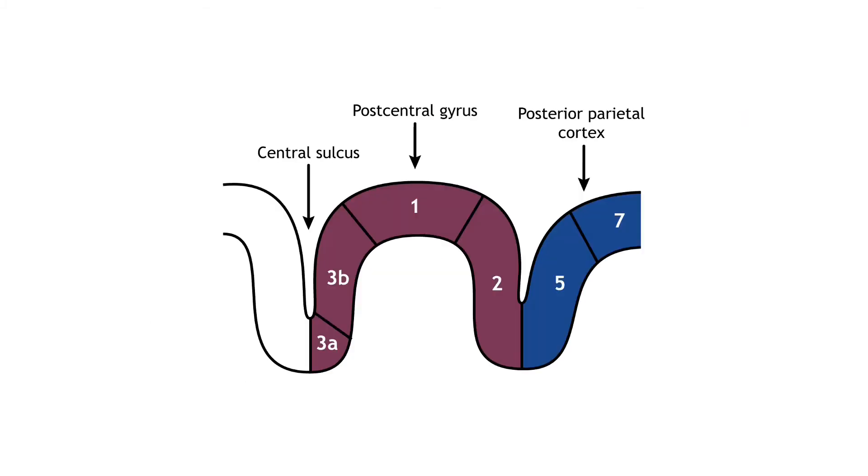The primary somatosensory cortex is divided into four regions, each with its own input and function: areas 3a, 3b, 1, and 2. Most touch information from mechanoreceptors inputs to region 3b, whereas most proprioceptive information from the muscles inputs to region 3a. These regions then send and receive information from areas 1 and 2. As processing of somatosensory information continues, the stimuli required to activate neurons becomes more complex. For example, area 1 is involved in sensing texture, and area 2 is involved in sensing size and shape of an object.